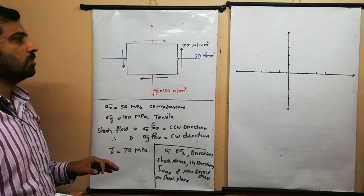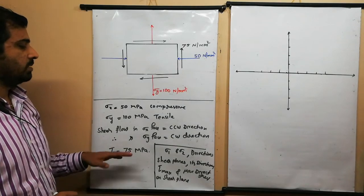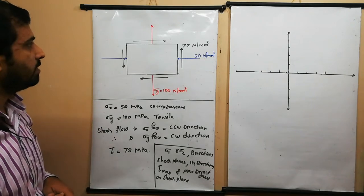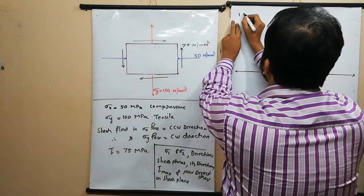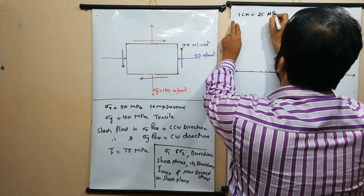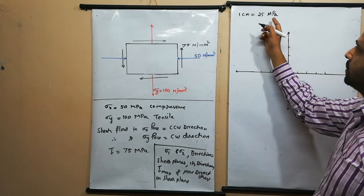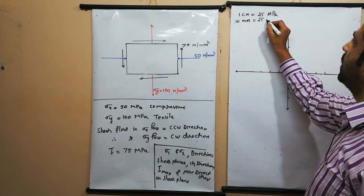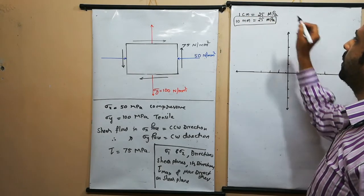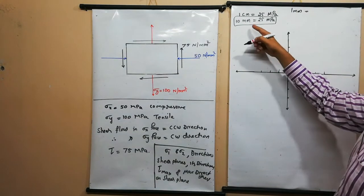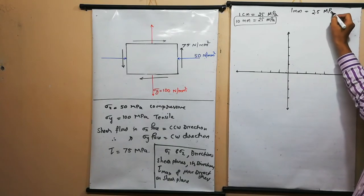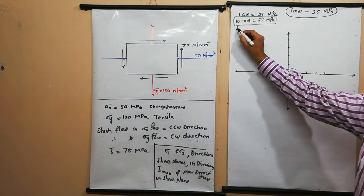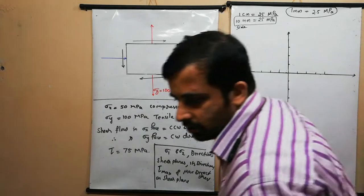First of all we can draw a Mohr's circle for determining the shear planes as well as the principal planes. For that we need to select a suitable scale. We will take 1 centimeter equal to 25 mega Pascal, which is Newton per mm square. So 10 mm equals 25 mega Pascal, meaning 1 mm is equal to 2.5 mega Pascal. This will be our scale for drawing the Mohr's circle.